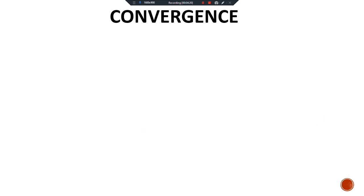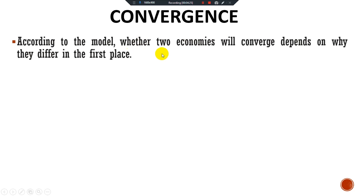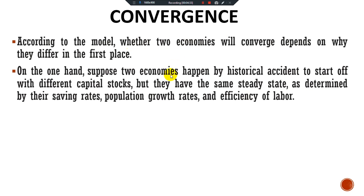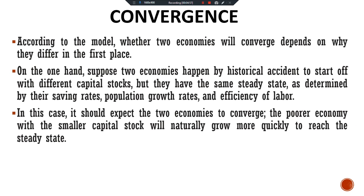According to the Solow model, whether two economies will converge depends on why they differ in the first place. Suppose two economies happen by historical accident to start off with different capital stocks, but they have the same steady state — as determined by their saving rates, population growth rates, and efficiency of labor. In this case, we should expect the two economies to converge. The poorer economy with the smaller capital stock will naturally grow more quickly to reach the steady state.